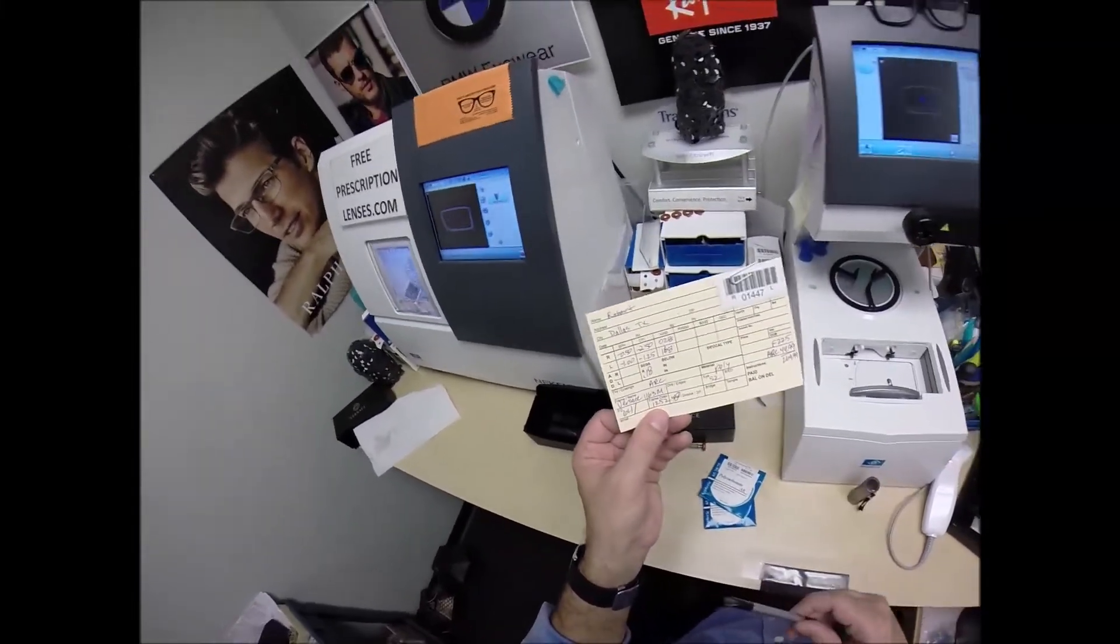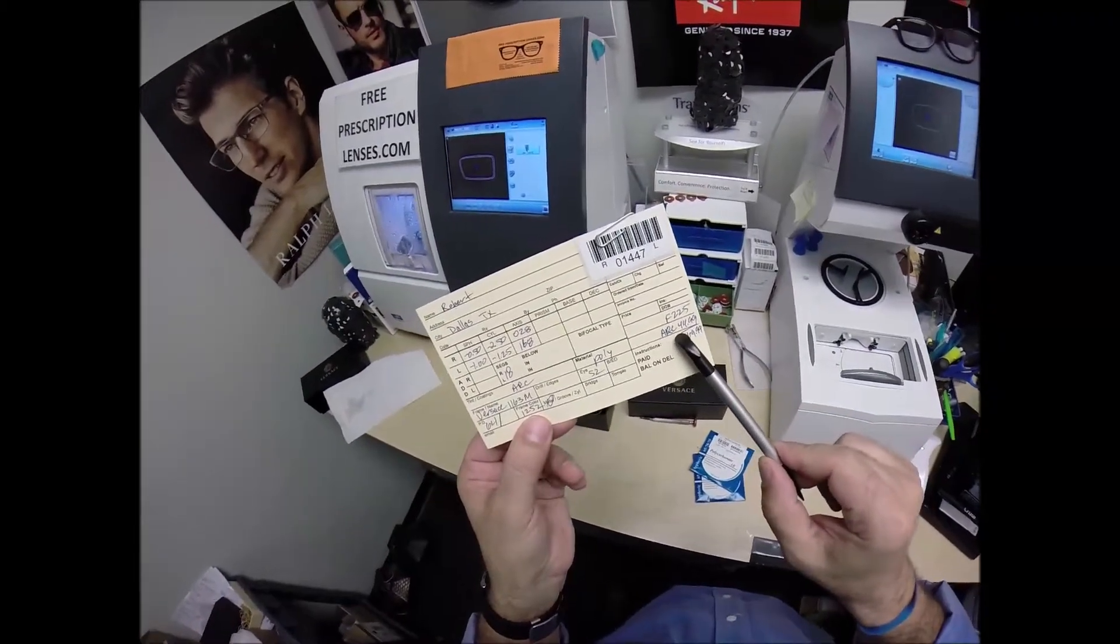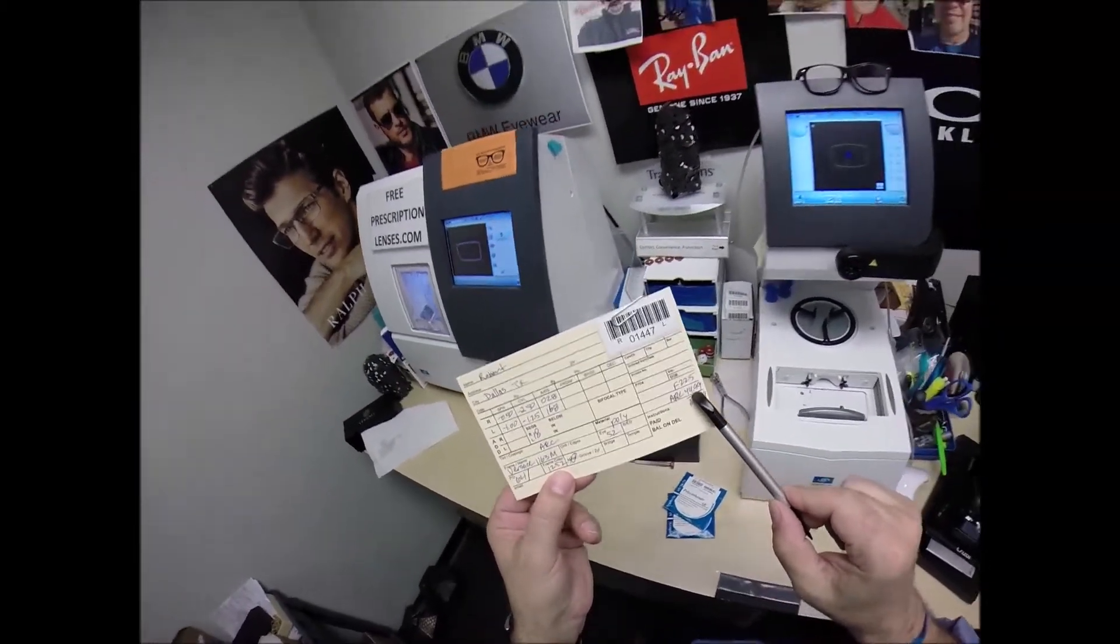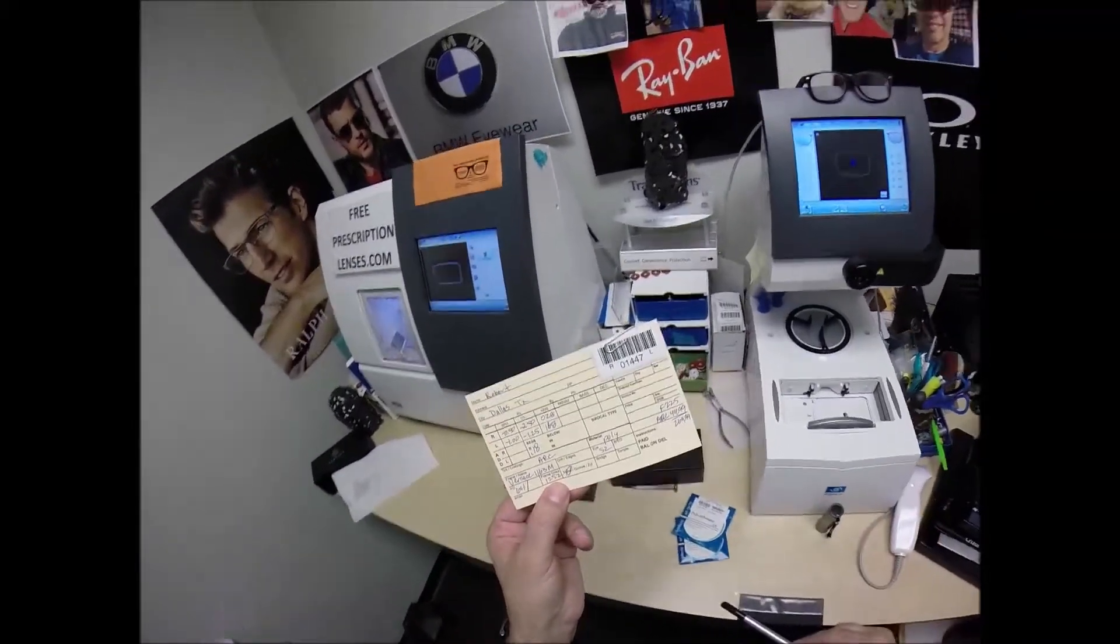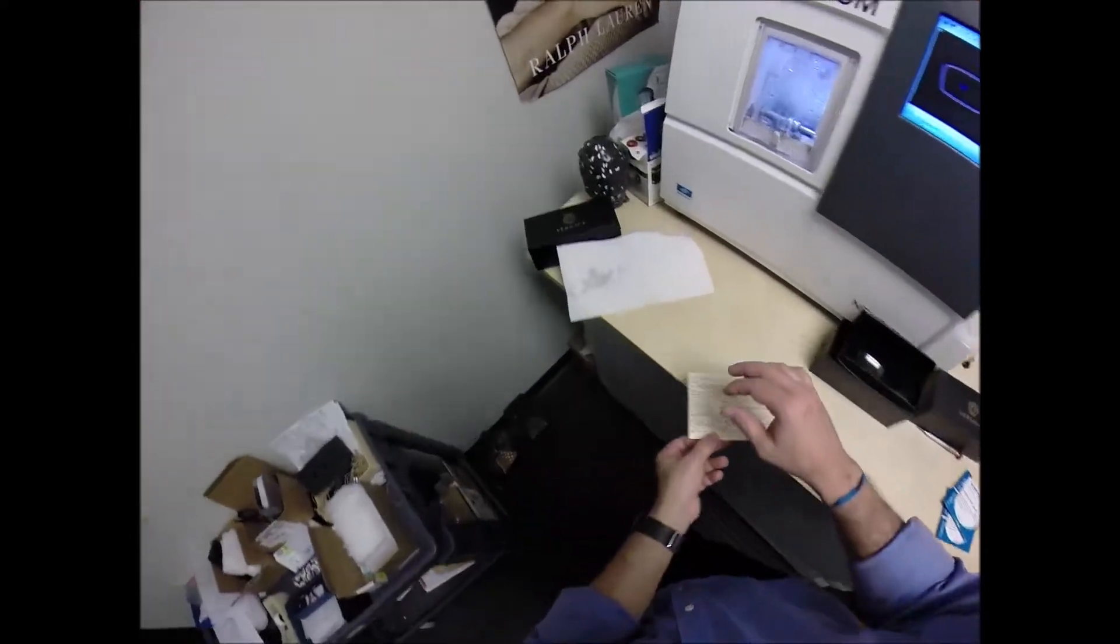Now, this frame sells for $225. The anti-reflective coating, the anti-glare coating, adds $44.99 for a total of $269.99. Now, I want to show you all something. What's hiding underneath here?